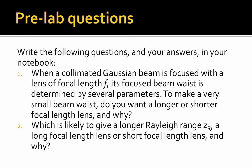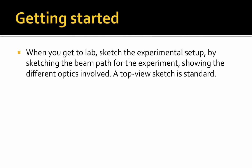The pre-lab questions are here and also in the lab sheet. Write these questions and your answers in your notebook. Question one: consider when a collimated beam is focused with a lens of focal length F. To make a small beam waist, do you want a longer or shorter focal length lens, and why? Also, which gives a longer Rayleigh range Z sub r — a long focal length lens or a short focal length lens, and why? These questions can guide your viewing of this video. Be sure when you get to the lab that you sketch the experimental setup by sketching the beam path and showing the particular optics involved.